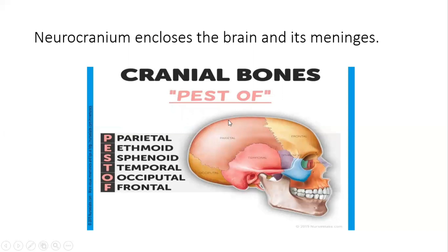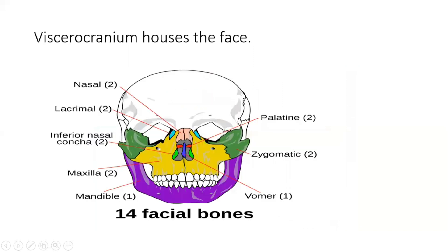There are two parietal bones, one on the right side and one on the left side. The parietal and temporal bones are paired — one on each side. We also have the ethmoid bone, the temporal bone, the sphenoid bone, and at the back of the head we have the occipital bone.